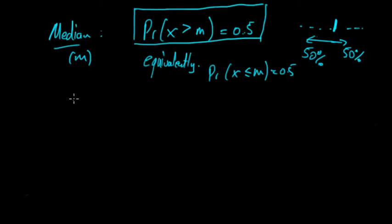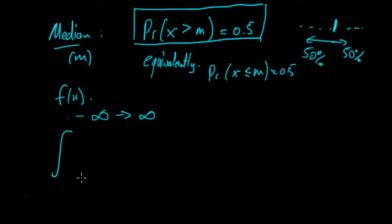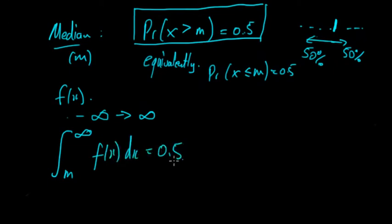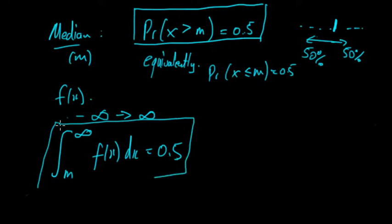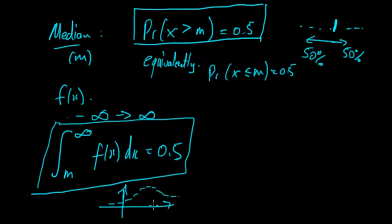To find the median, you set up an integral. There are two scenarios. If the distribution spans from negative infinity to infinity, you calculate: the integral from m to infinity of f(x) dx = 0.5, and then solve that equation. Graphically, you're finding the area of the function and you want to find m such that the area to the right of it equals 0.5, i.e., 50%. That value is the median.